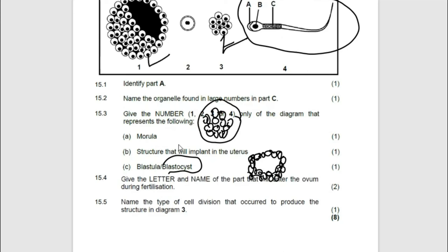They are saying: which structure will implant? The moment you form a blastula, it forms finger-like projections which we call chorionic villi, which are used for implantation. So basically it is going to be number one again — number one.